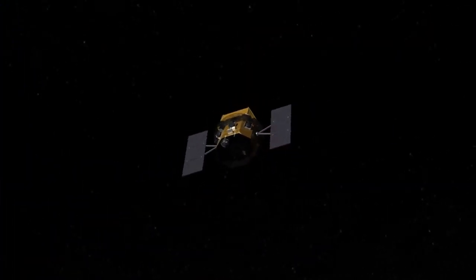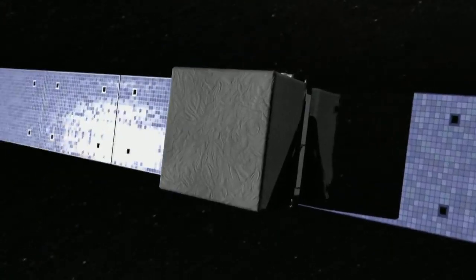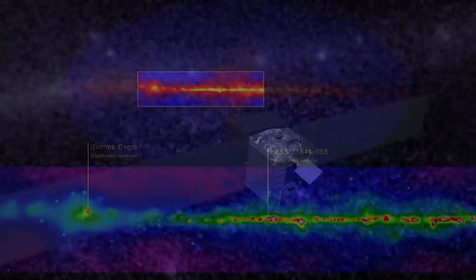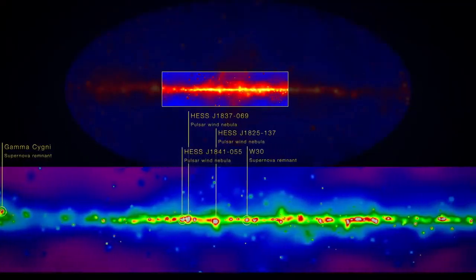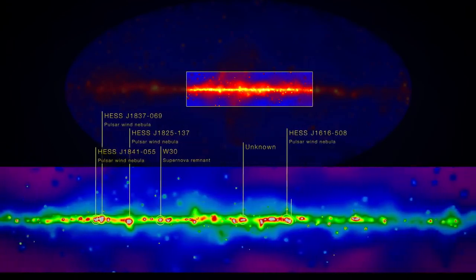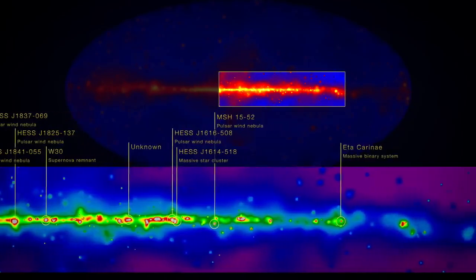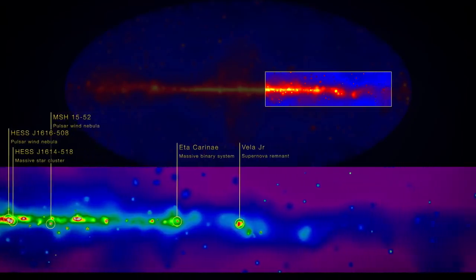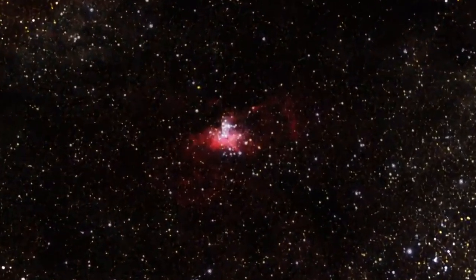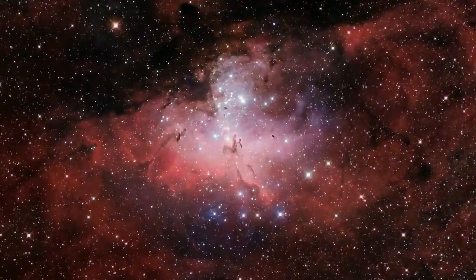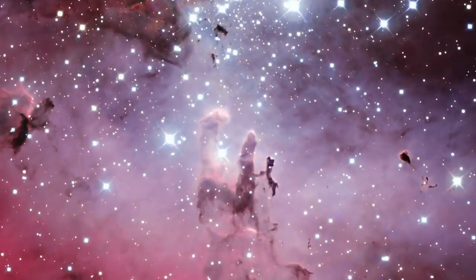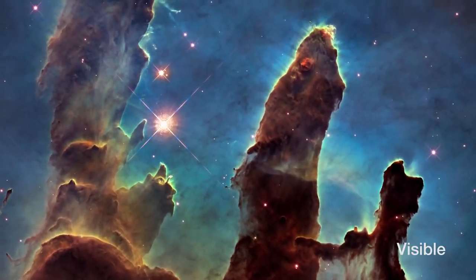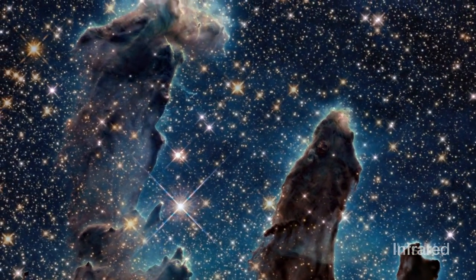Because high-energy light does not penetrate our atmosphere, scientists launched a fleet of space observatories, designed to capture wavelength bands from gamma-ray to infrared. These wavelengths tell us the temperature of matter in an object. Gamma rays and X-rays: tens to hundreds of millions of degrees. Ultraviolet: hundreds of thousands. Visible light: tens of thousands. Infrared: hundreds of degrees.